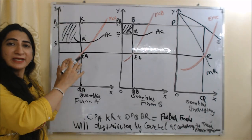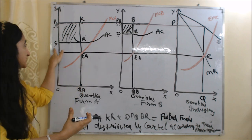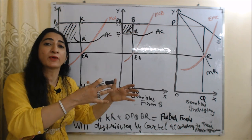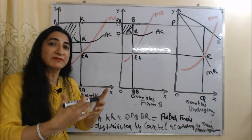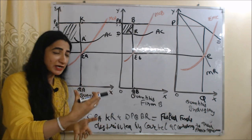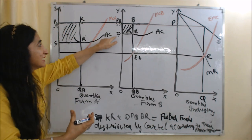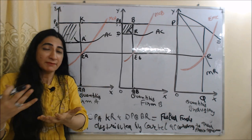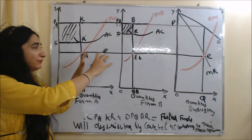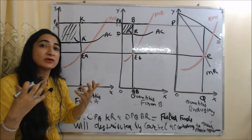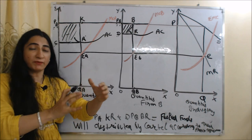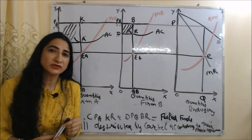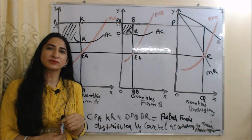Here you can see Firm A is getting more profit compared to Firm B — C-PA-K-R is more than D-PB-B-R. But it doesn't mean Firm A will actually receive this profit. Their joint profit will go into a pooled fund and will be distributed by the cartel according to their previous agreement. And this is all about joint profit maximization cartel. Thank you so much for watching this video.